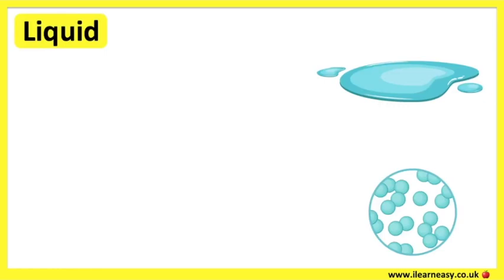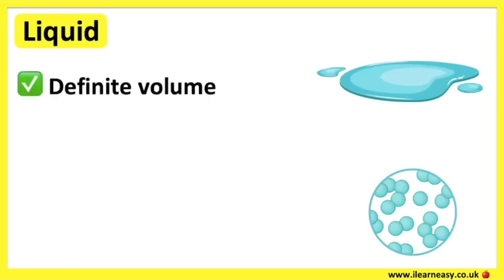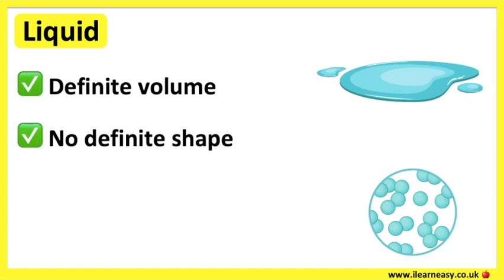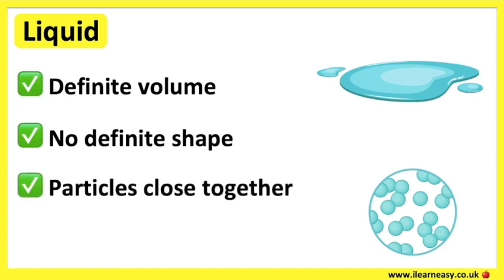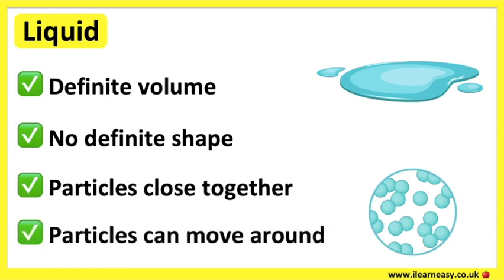Liquids have a definite volume, but no definite shape. This is because the particles are close together, but they are arranged in a random way. This means that the particles are able to move around each other slightly. The bonds between the particles are strong enough to keep the particles close together, but they are weak enough to allow them to move around each other.